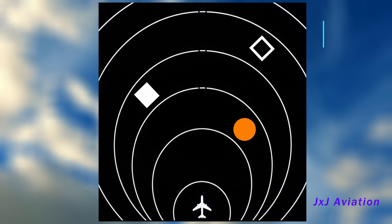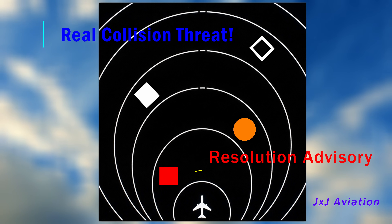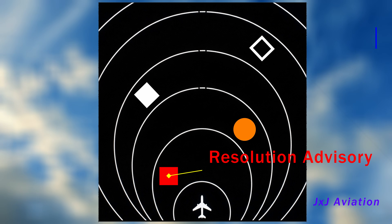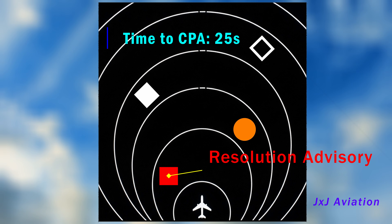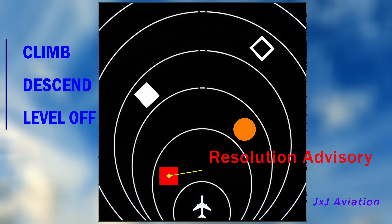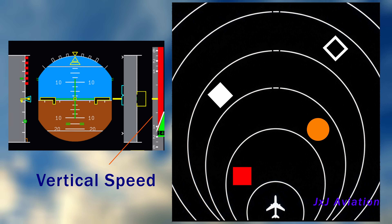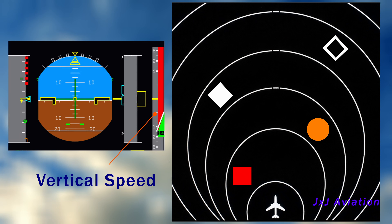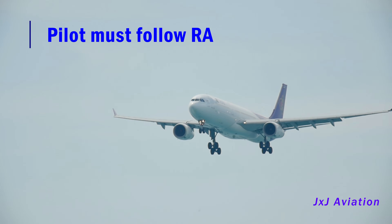If the system senses a real collision threat, the indication becomes a red square. This is called a Resolution Advisory. The approximate time to collision, or time to closest point of approach, is 25 seconds. The system gives aural commands to climb, descend, or level off. It also shows a green band on the vertical speed indication on the PFD, which corresponds to the aural commands. The pilot must take corrective action and maintain the vertical speed shown.